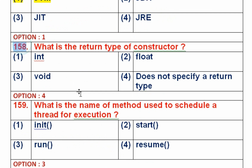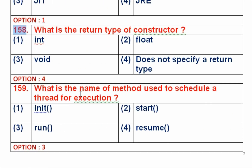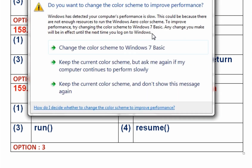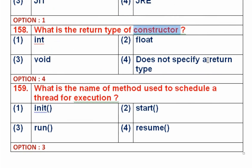Question number 158: What is the return type of a constructor? A constructor is a special function in object-oriented programming whose name is the same as the class name, and it is executed automatically when an object is created. It does not return any value. So option 4, no return type, is the right answer.